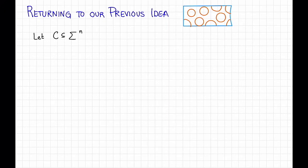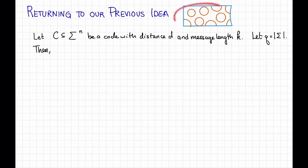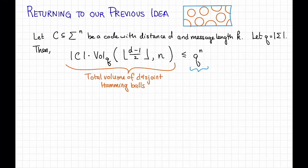Let c be a subset of sigma to the n so it's a code of length n over the alphabet sigma. And let's say it has distance d and message length k. And let's let q be the size of sigma. Then following the intuition that we had before from this picture we must have that c times the volume of a Hamming ball of radius d minus 1 over 2 in dimension n has to be less than or equal to q to the n. This here is the total volume taken up by all those disjoint balls and this is the volume of the whole space sigma to the n.